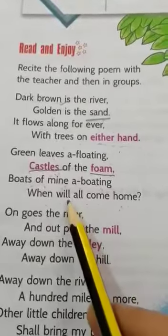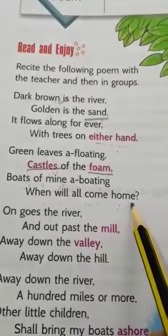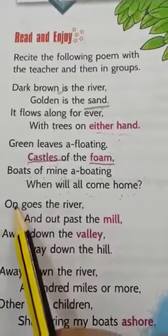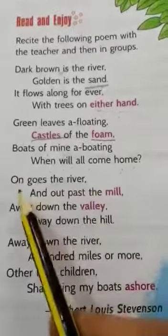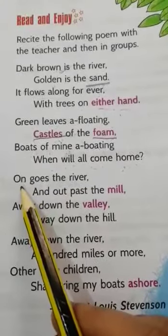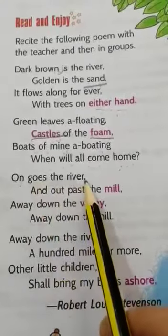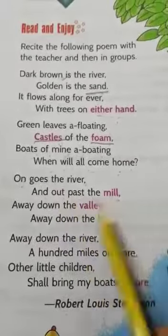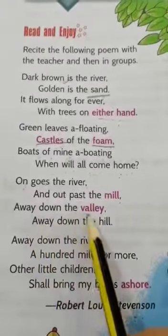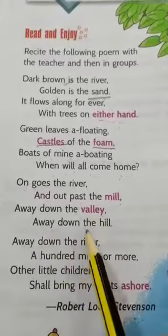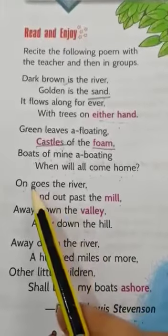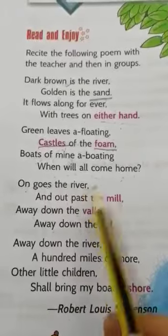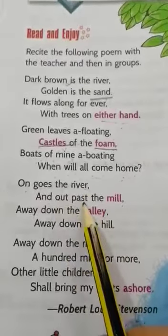It is not known where they will go. In the next stanza, the poet says: 'On goes the river and out past the mill, away down the valley, away down the hill.' That is, the river keeps flowing continuously — and what does it pass? It passes a mill.